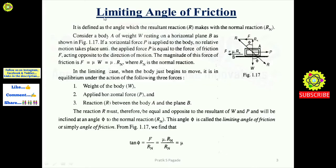The limiting angle of friction is defined as the angle which the resultant reaction R makes with the normal reaction RN. In the limiting case, when the body just begins to move, it is in equilibrium under three forces: the weight of the body W, the applied horizontal force P, and the reaction R between body A and plane B.